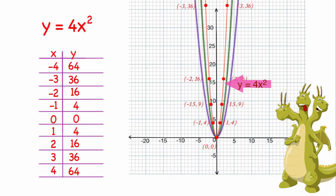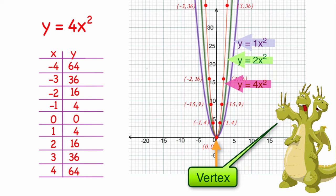Alright, 4x squared is skinnier than 2x squared, which is skinnier than 1x squared. So the larger the number in front of the x, the skinnier the graph. And I noticed that all three of these graphs have the same vertex. They all have the same center.